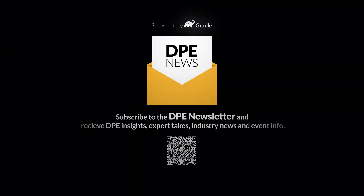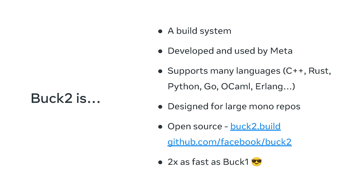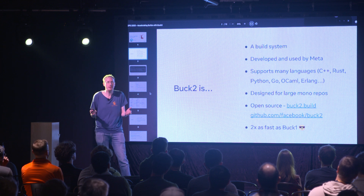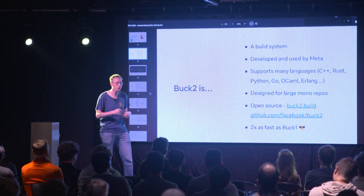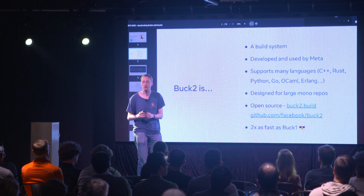Buck2 is a build system. It takes your source files and turns them into object files, binaries, and the like. It's been developed at Meta for the last four years and it supports many programming languages: C++, Rust, Erlang, OCaml, and lots more. It's designed for large monorepos, but that doesn't mean it's not applicable for smaller repos or multirepos — it has all the things you need if you do have a large monorepo.